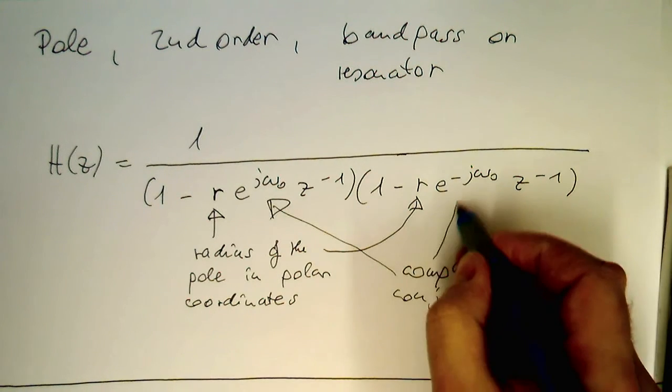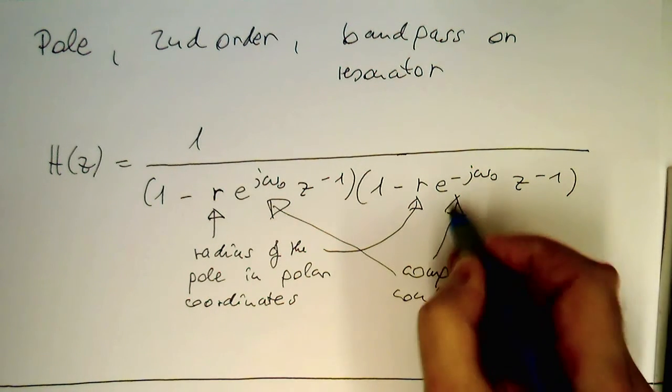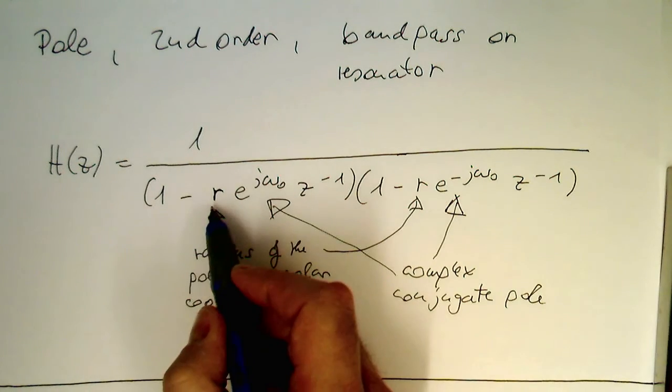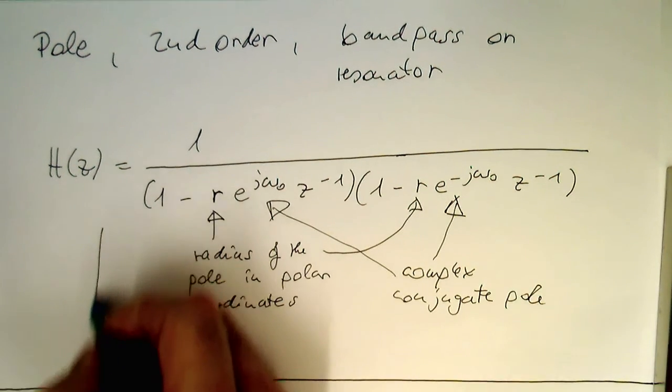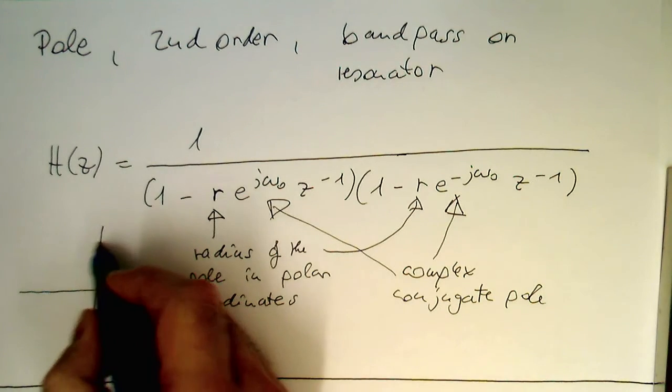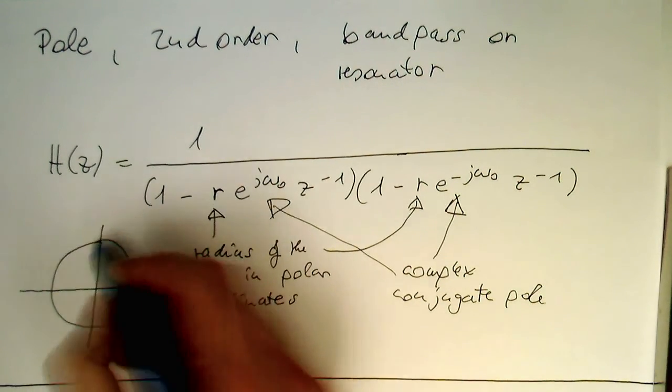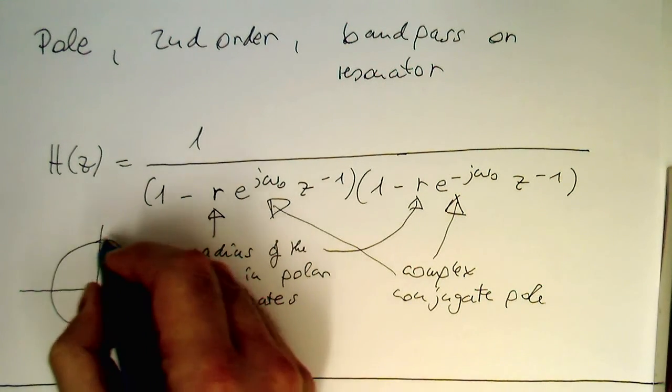So this gives us complex conjugate poles. So here and here. But the addition is that this radius is defined here, so this means, so if this is our unit circle here, so this is here, 1 and this is 1, so this is real.